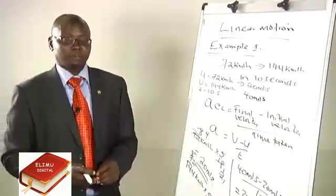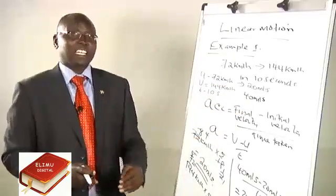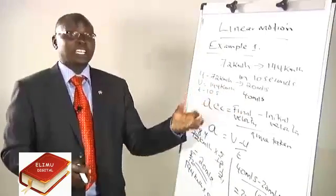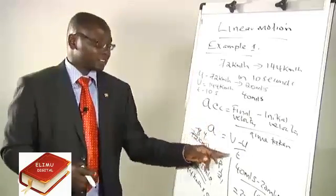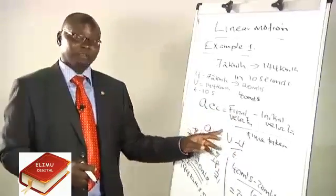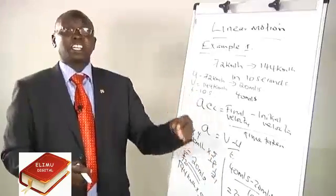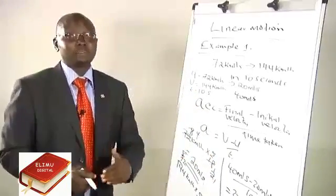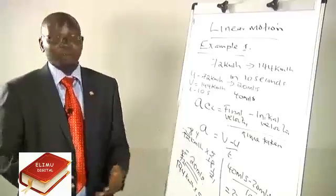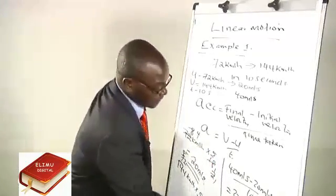To summarize how we work out a problem involving acceleration: first, confirm you are working with the right units — meters per second. Then write what you have and confirm the units. From there, write the equation: acceleration equals V minus U divided by time, where V is final velocity, U is initial velocity, and t is time taken. Then substitute and write the answer.